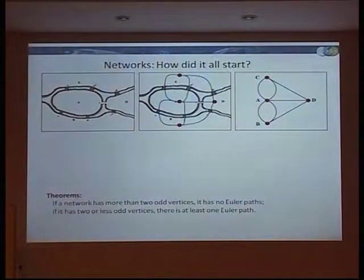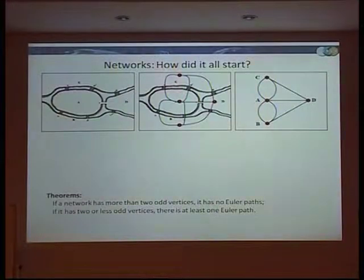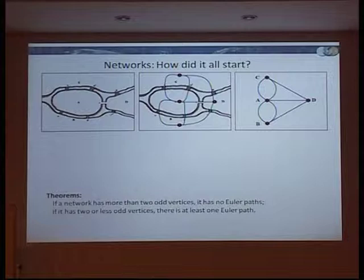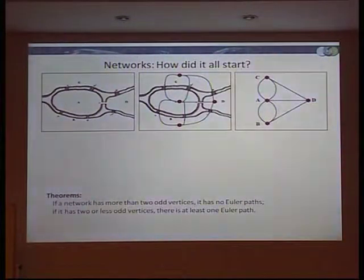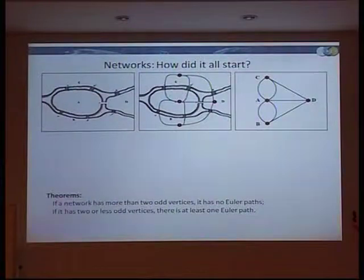Does anybody know what an odd node means? It actually means a node with an odd degree. A degree is basically the amount of connections a node has. So if you have more than two dots that have more than three — or an odd number of — little lines on them, that means there is no Euler path. You cannot go from one end to the other crossing every bridge just once; there is at least one bridge you have to cross two times.